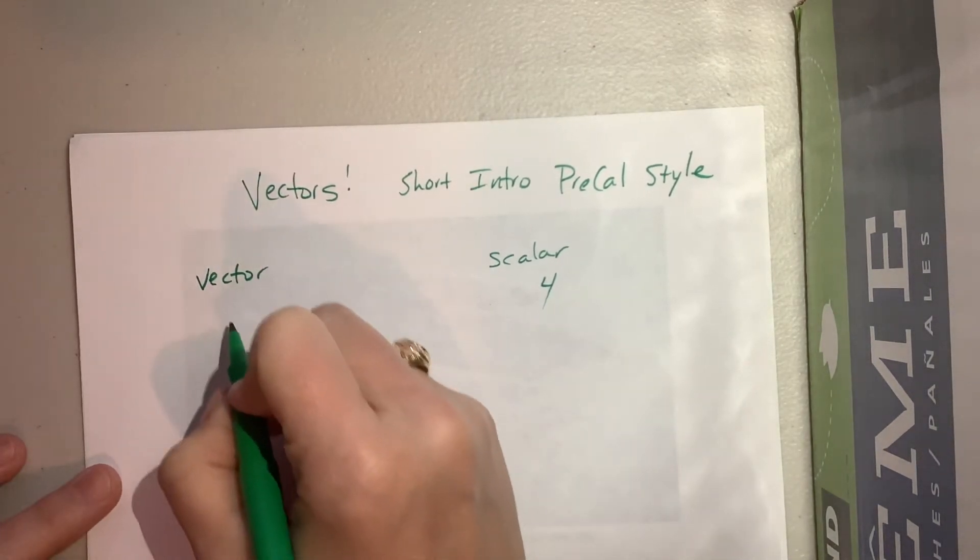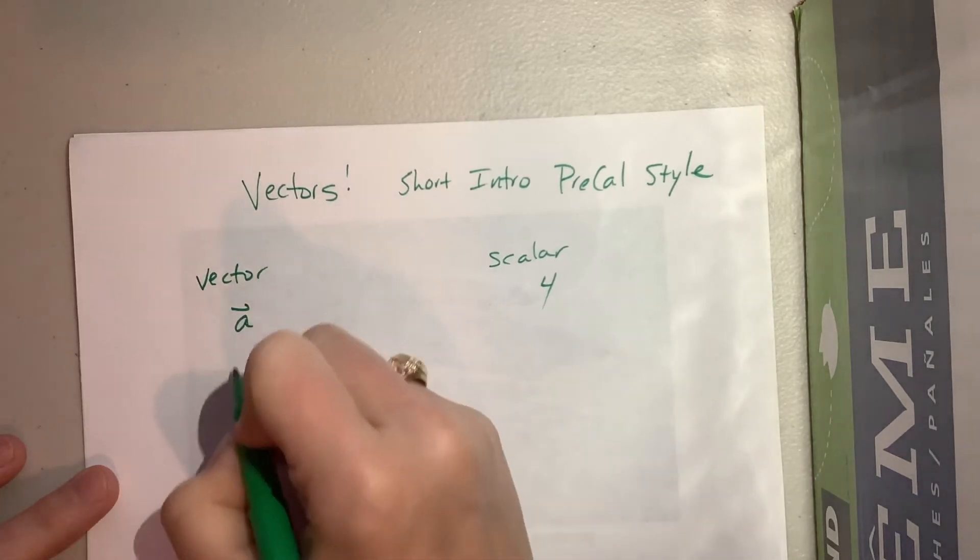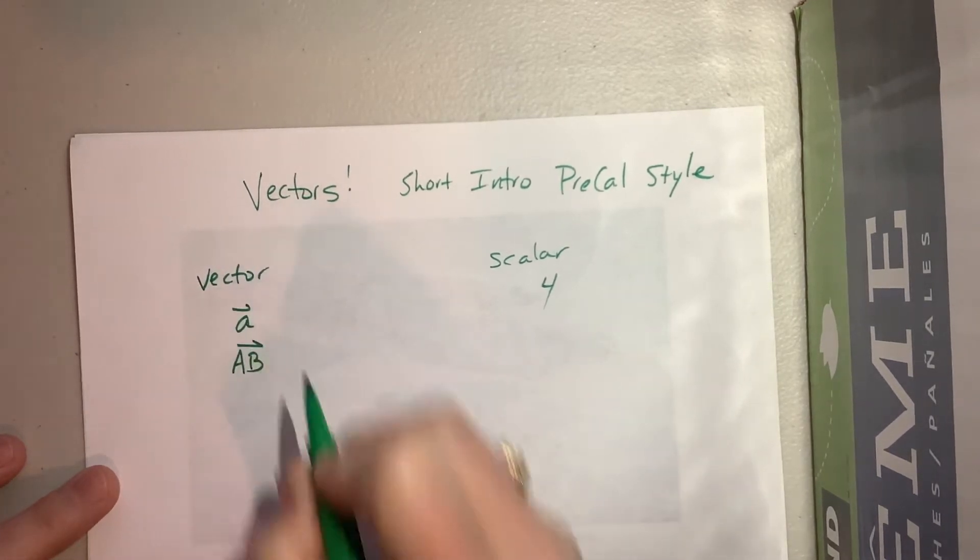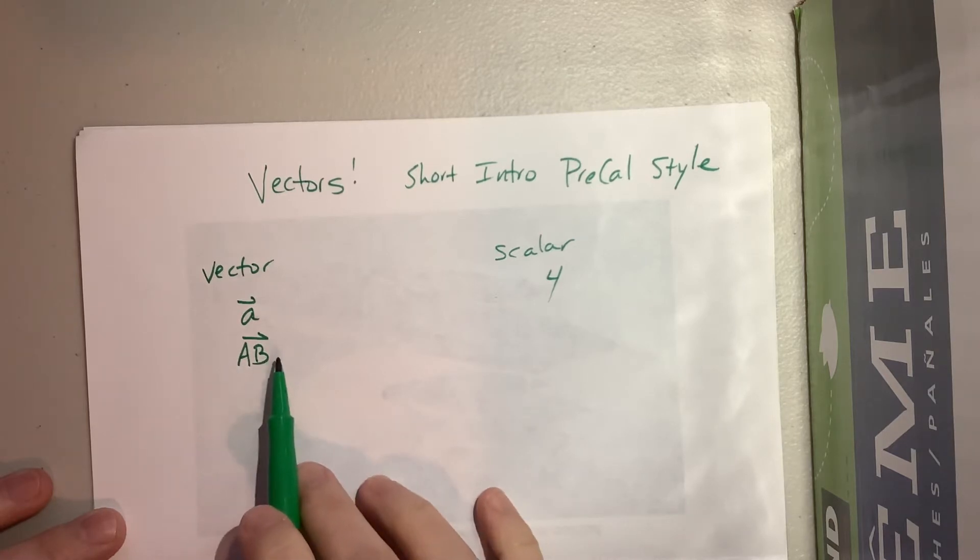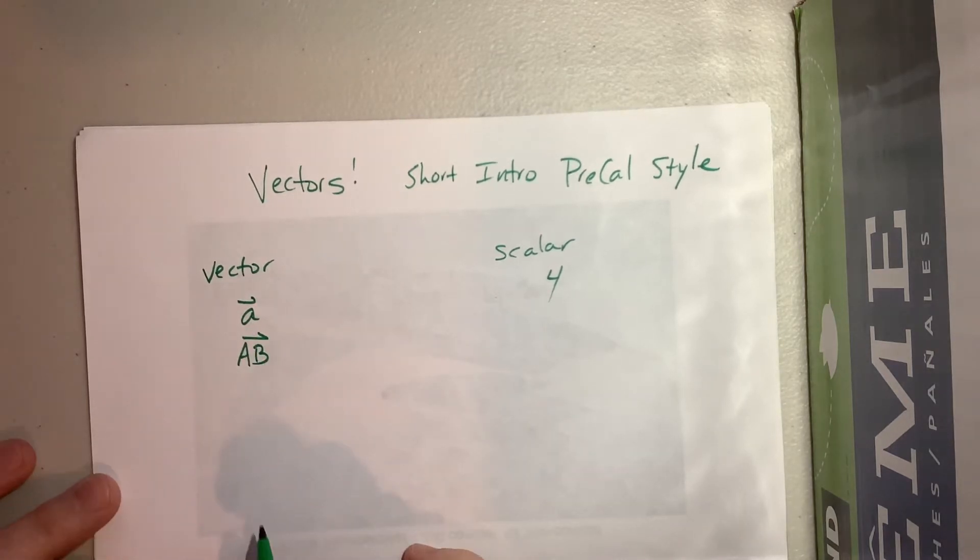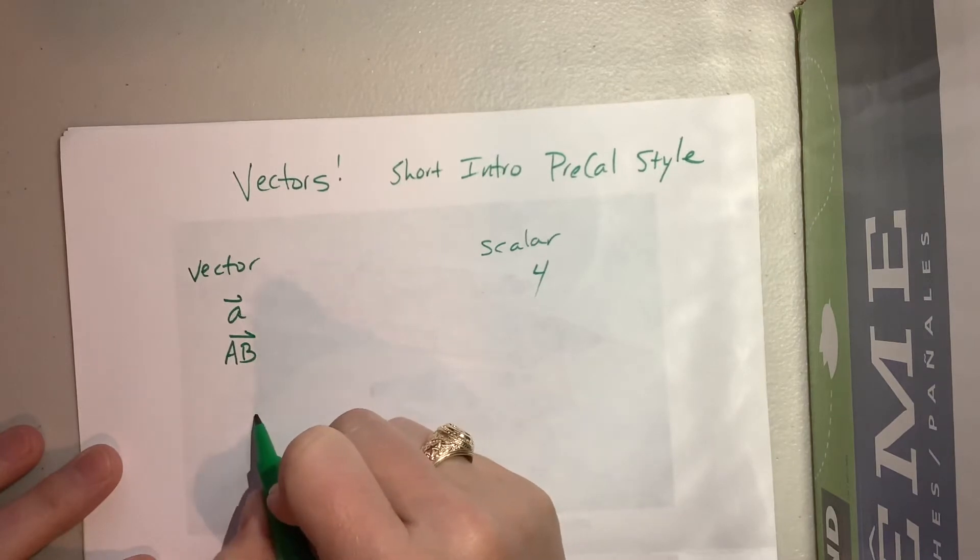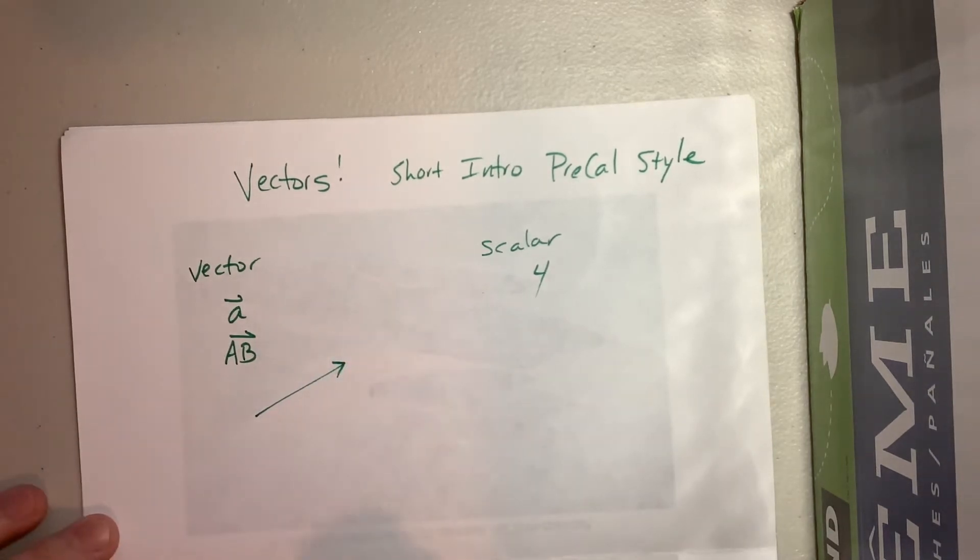A vector, however, so I could say something like vector A or I might describe this vector AB. If I do this it's telling me I'm starting at point A and I'm ending at point B and I'm going in the direction from A to B.